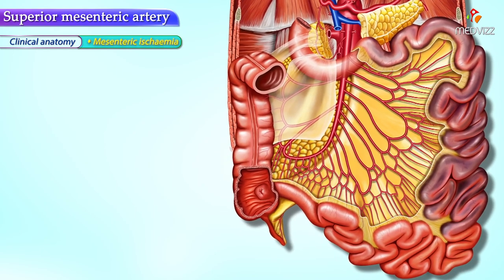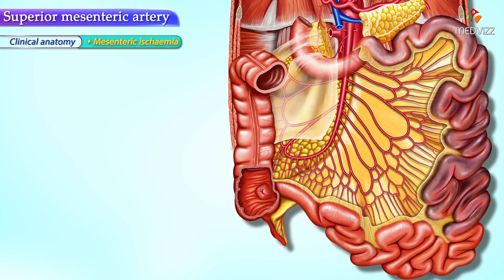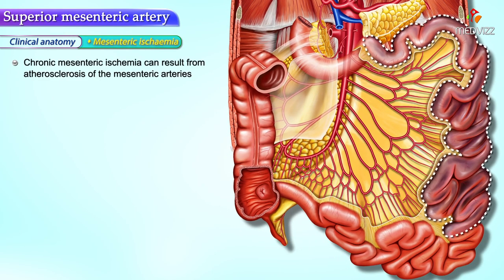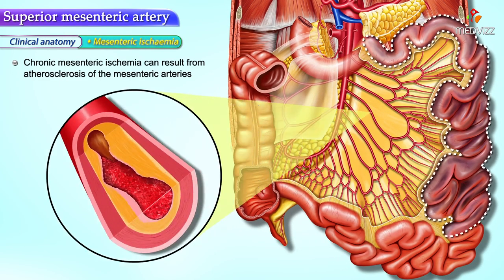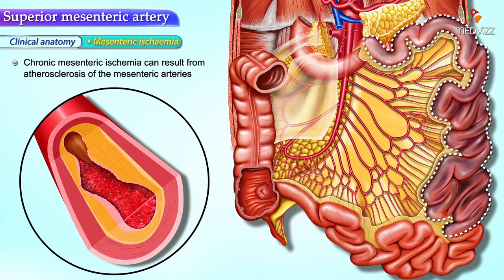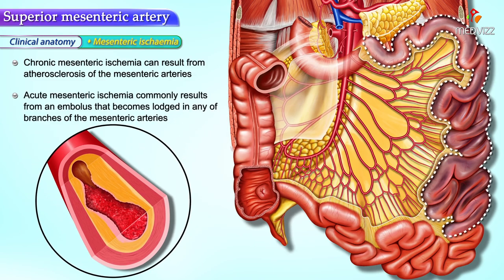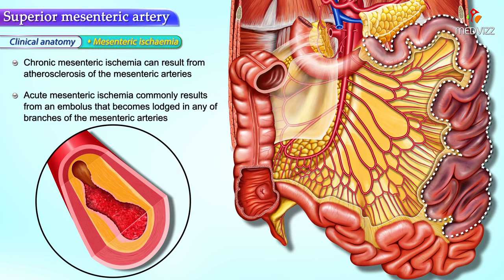Mesenteric ischemia: chronic mesenteric ischemia can result from atherosclerosis of the mesenteric arteries, whereas acute mesenteric ischemia commonly results from an embolus that becomes lodged in any of the branches of the mesenteric arteries.